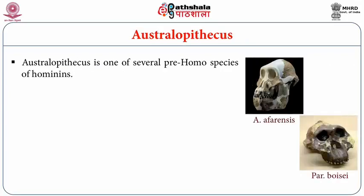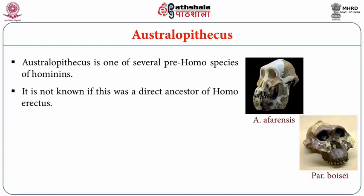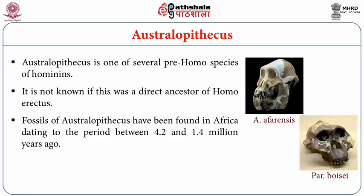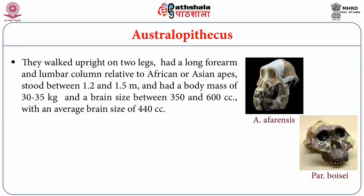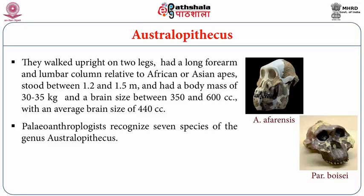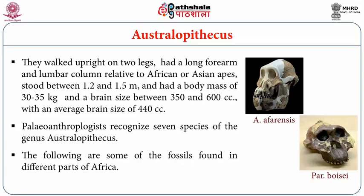Australopithecus is one of several pre-Homo species of hominins, and it is not known if it was a direct ancestor of Homo erectus. Fossils have been found in Africa dating between 4.2 and 1.4 million years ago. They are known to have used tools if not made them, walked upright on two legs, had a long forearm and lumbar column relative to African or Asian apes, stood between 1.2 to 1.5 meters, had a body mass of 30 to 35 kg, and a brain size between 350 and 600 cc with an average of 440 cc. Paleoanthropologists recognize seven species of the genus Australopithecus.